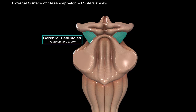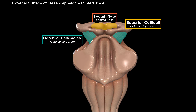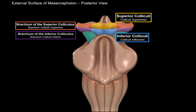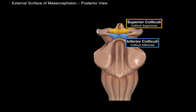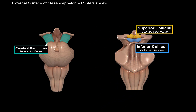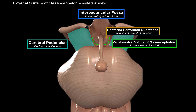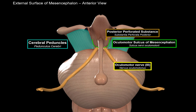From the posterior view, we can see the cerebral peduncles as well as the tectum plate. The tectum consists of the superior colliculi, involved in incorporating environmental stimuli and coordinating gaze shifts, and the inferior colliculi, which take in sound information and send it up to the medial geniculate bodies. From the anterior perspective, we can see the cerebral peduncles and between them the interpeduncular fossa, where we find the posterior perforated substance and the oculomotor sulcus of the mesencephalon — where the oculomotor nerve exits.